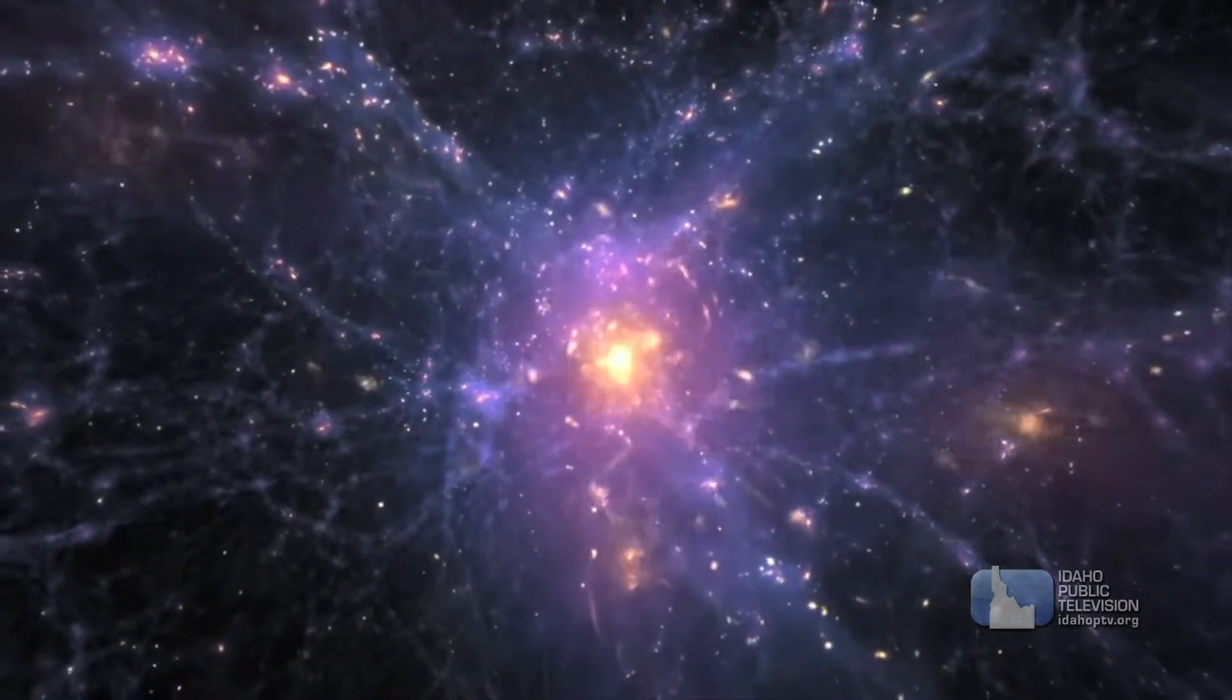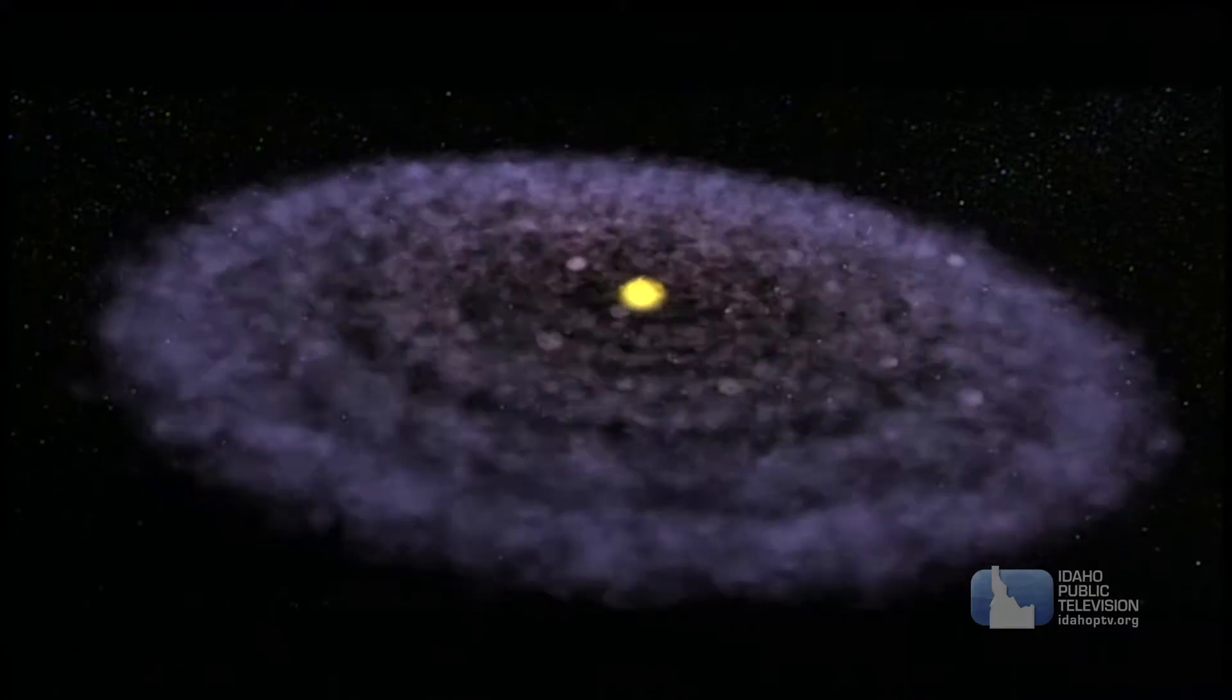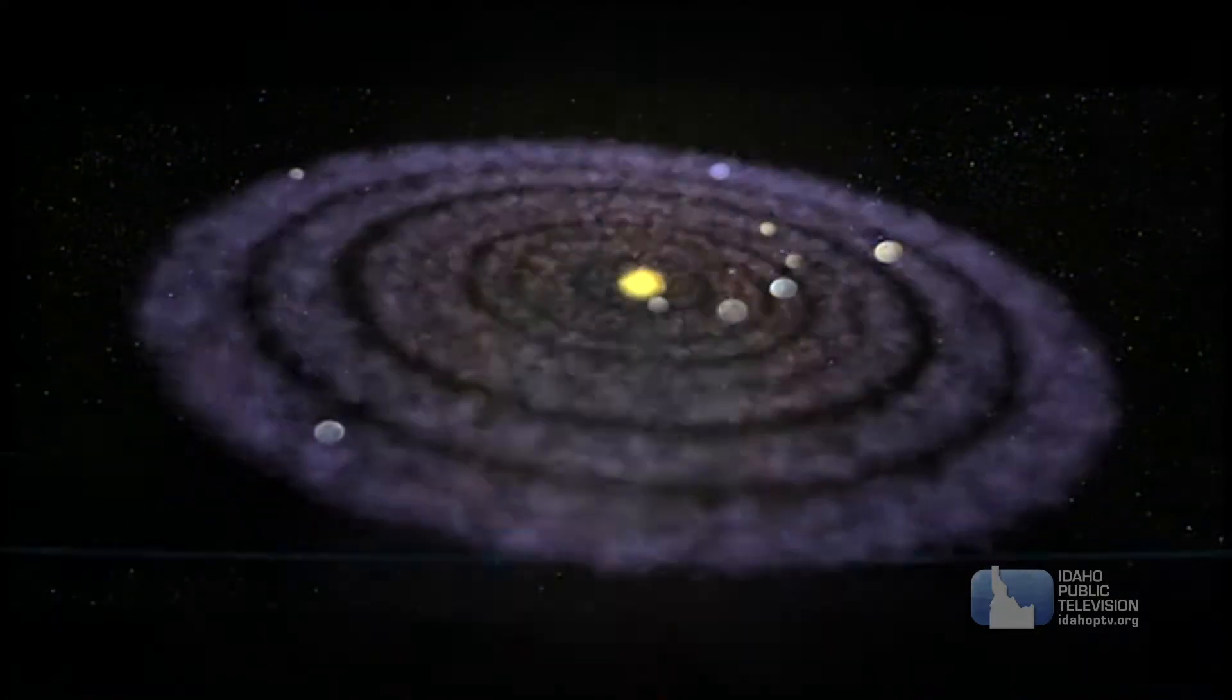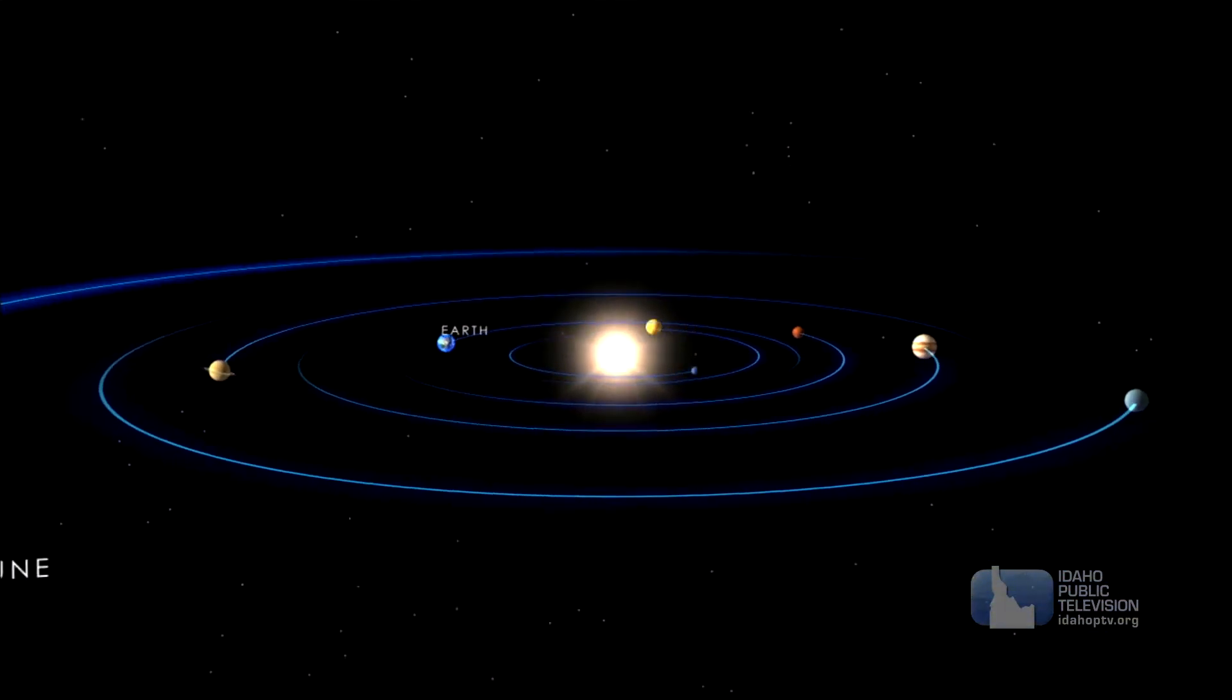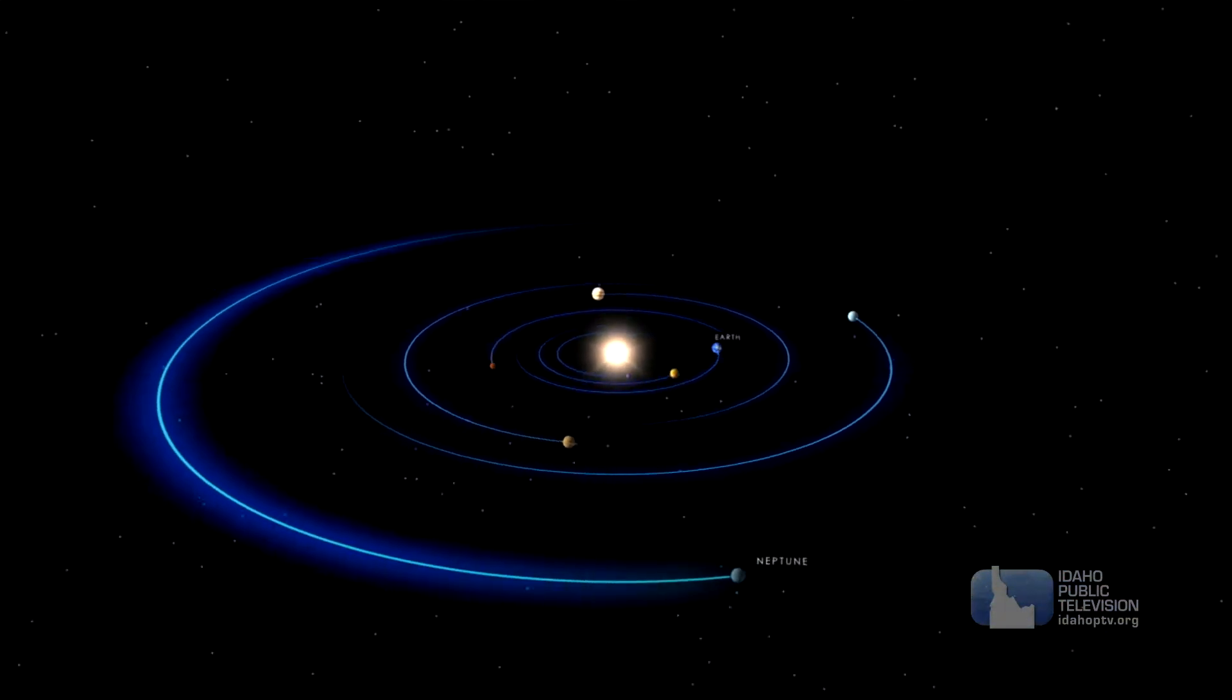Other clumps of material formed the planets, moons, asteroids, comets, the things we call our solar system. The sun's strong gravity holds all those things in an orbit with the sun at the very center and everything else revolving around it.